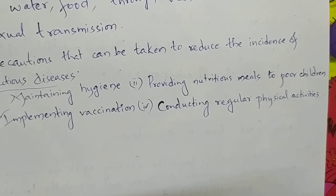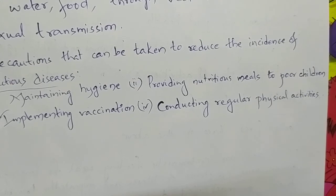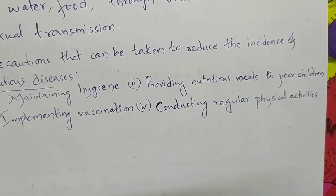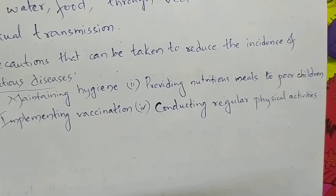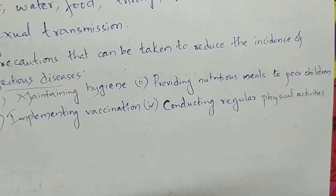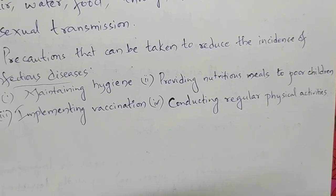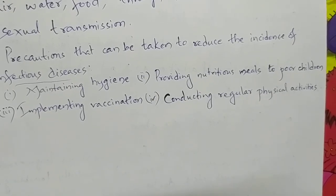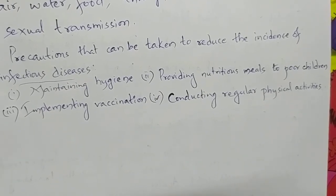What are the immunization programs available at the nearest health center? There are many. As a public health program, childhood vaccination and even adolescent vaccination are available, by which many infectious diseases can be prevented.